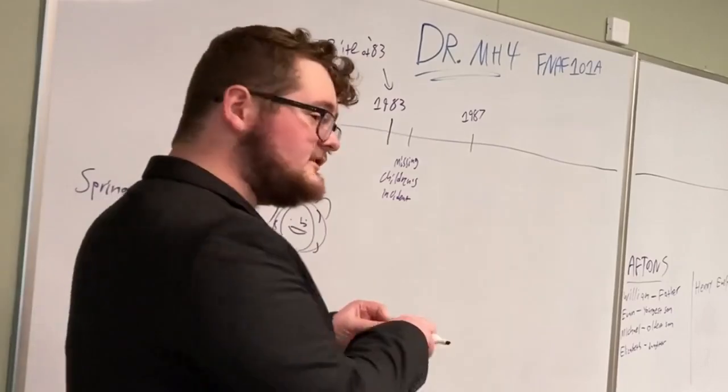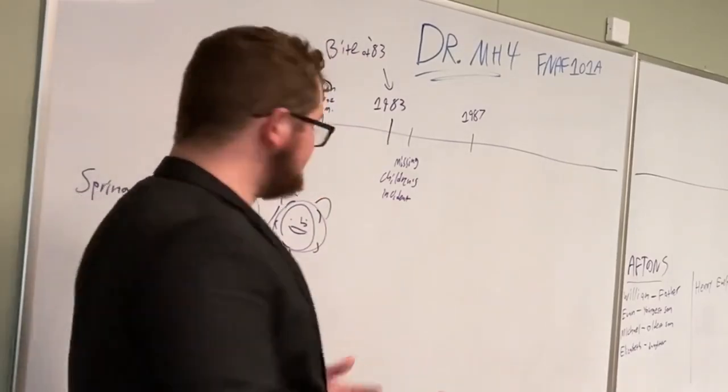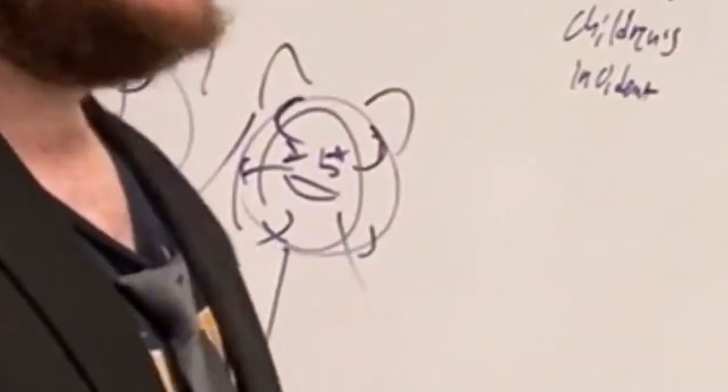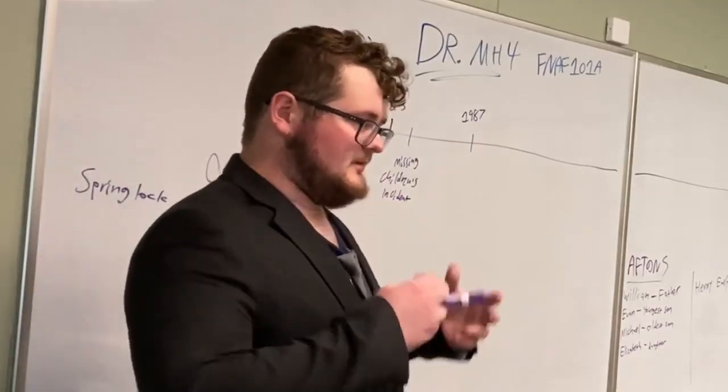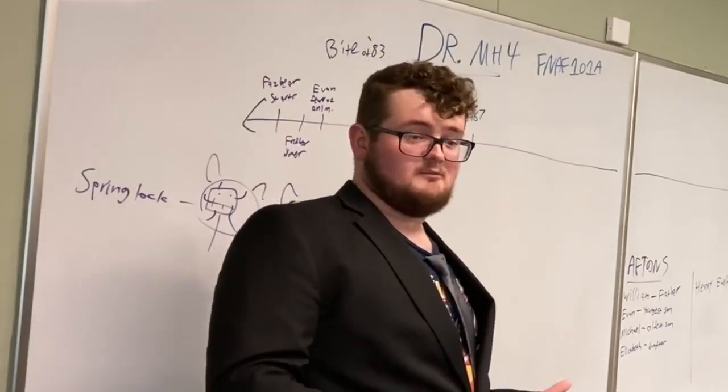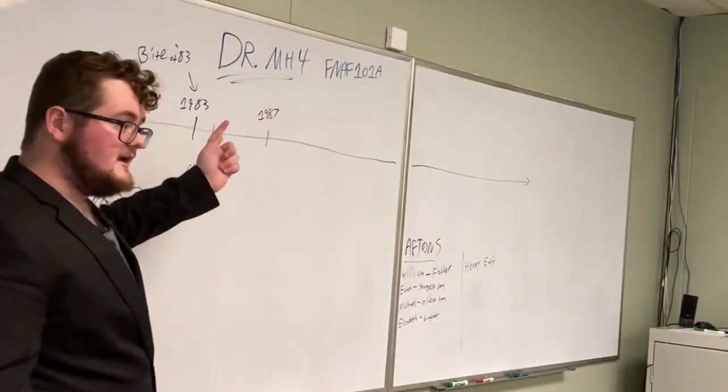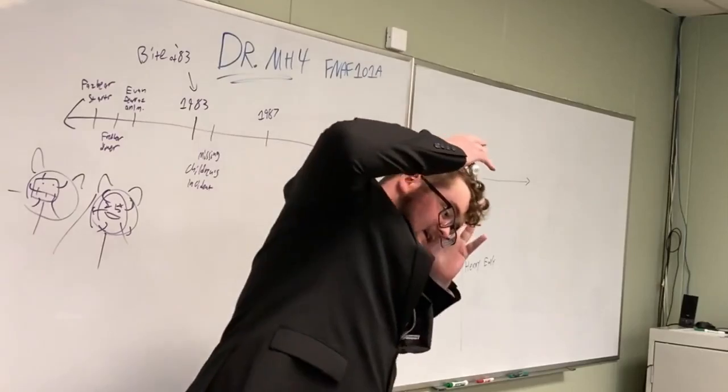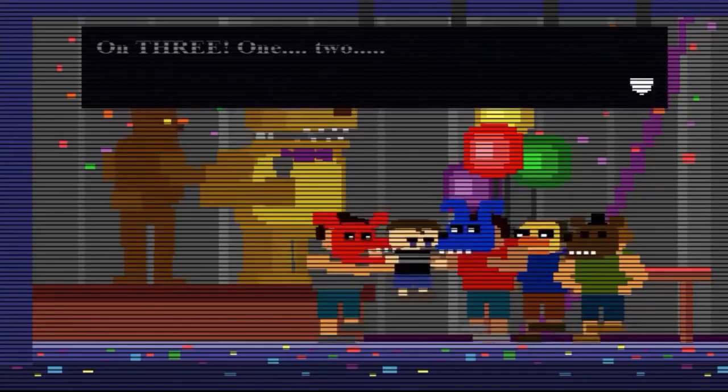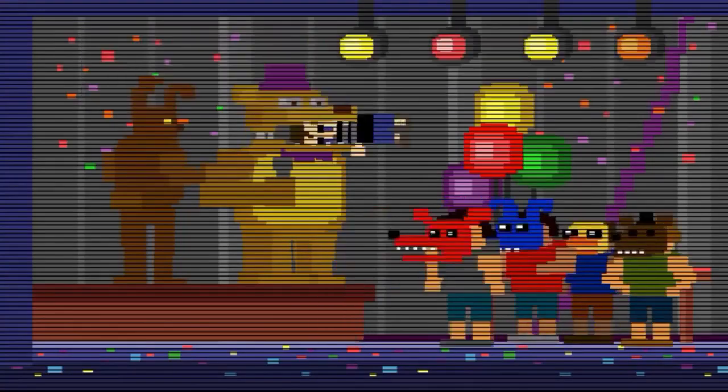Which means you get impaled by a bunch of springs locking into you. Which does not sound like it would be fun. In the Bite of 83, Evan Afton's head is inside Fredbear's mouth. And his shaking and crying causes a springlock failure. And the robot bites his frontal lobe.